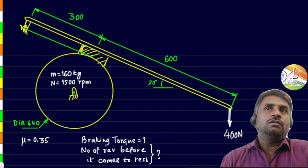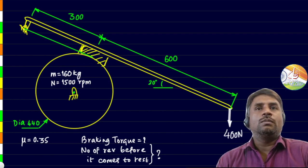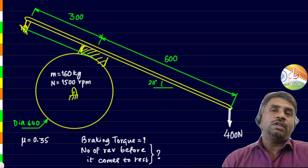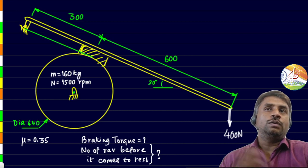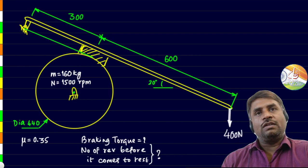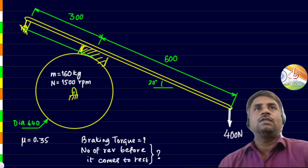The braking torque is what we need to find. The number of revolutions before it comes to rest also we need to find. Right now it's rotating at 1500 rpm and from this speed till it comes to rest, how many revolutions it undergoes we have to find.